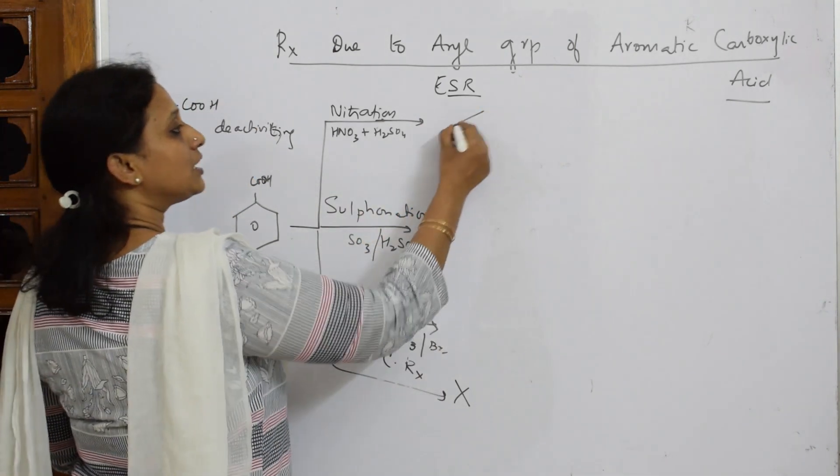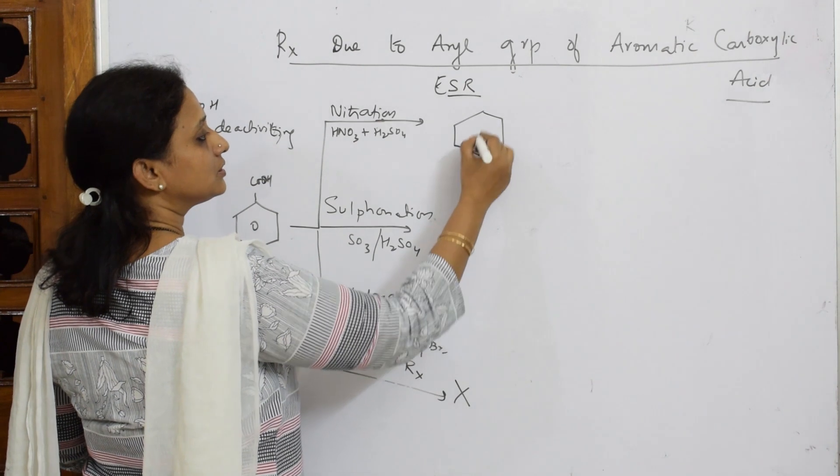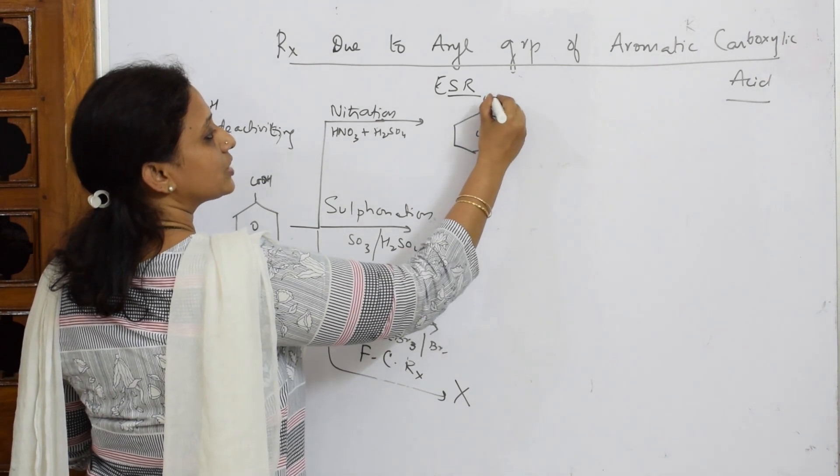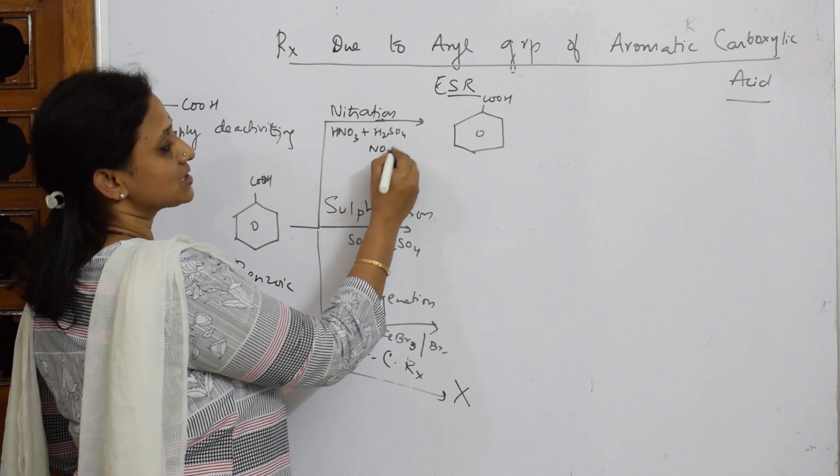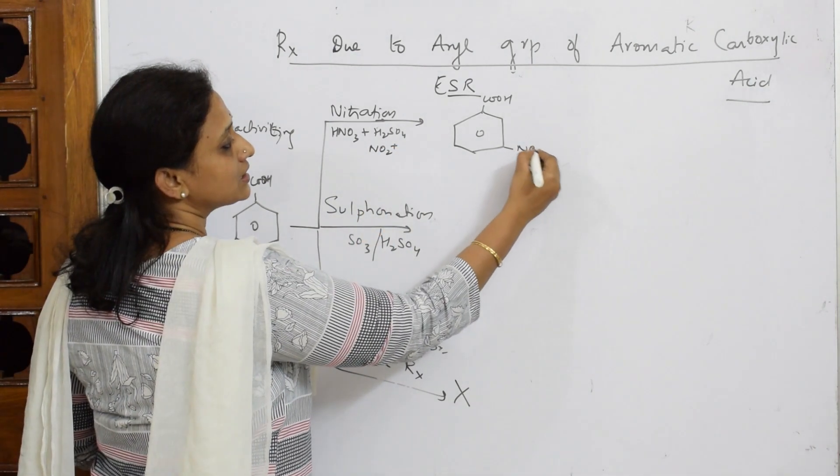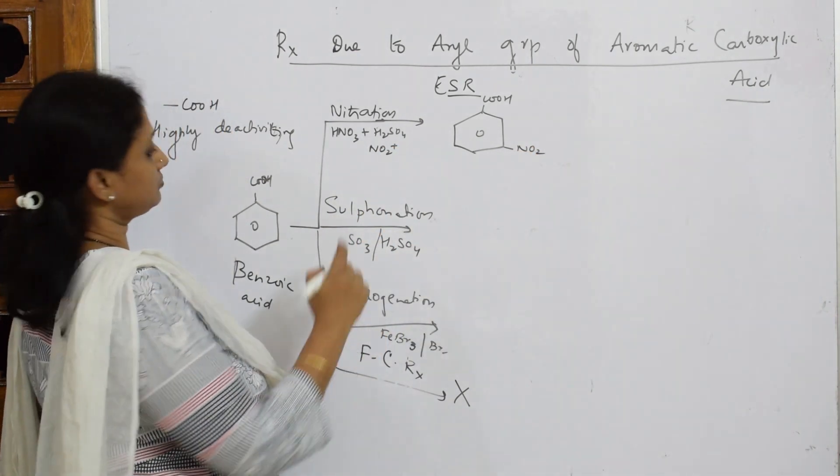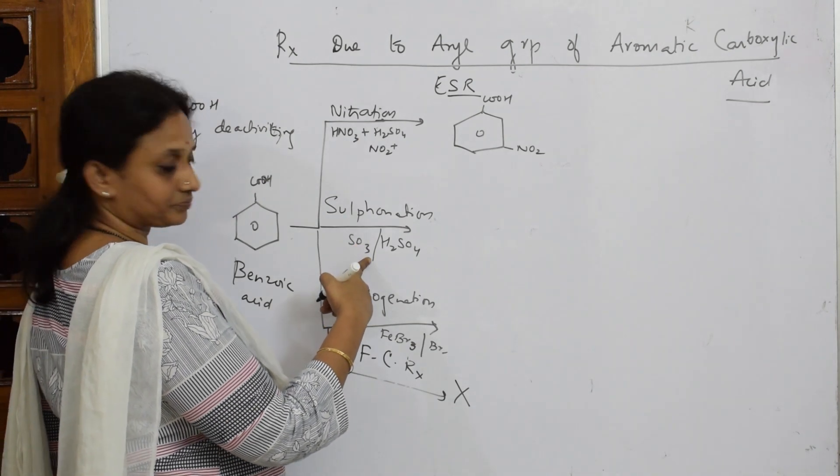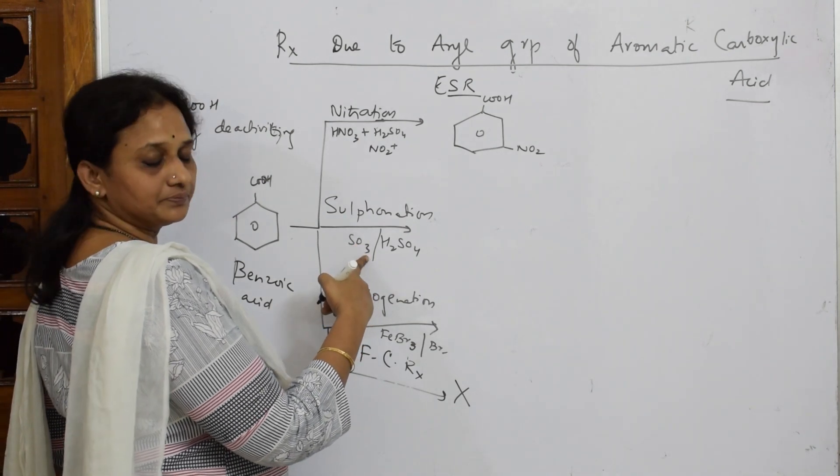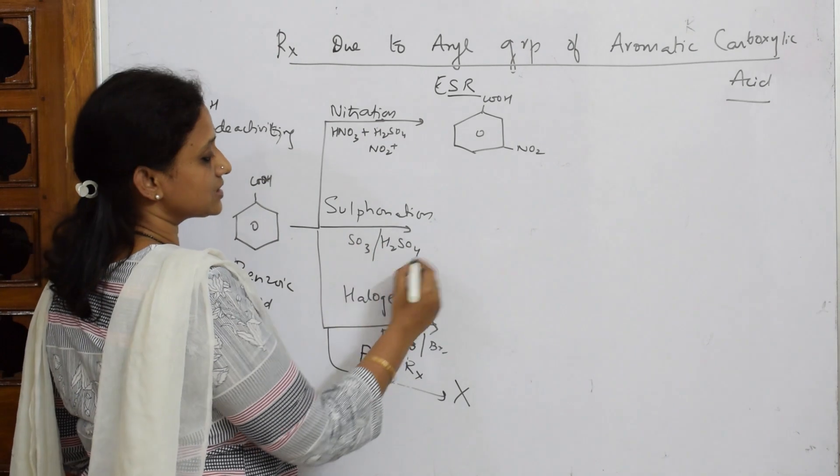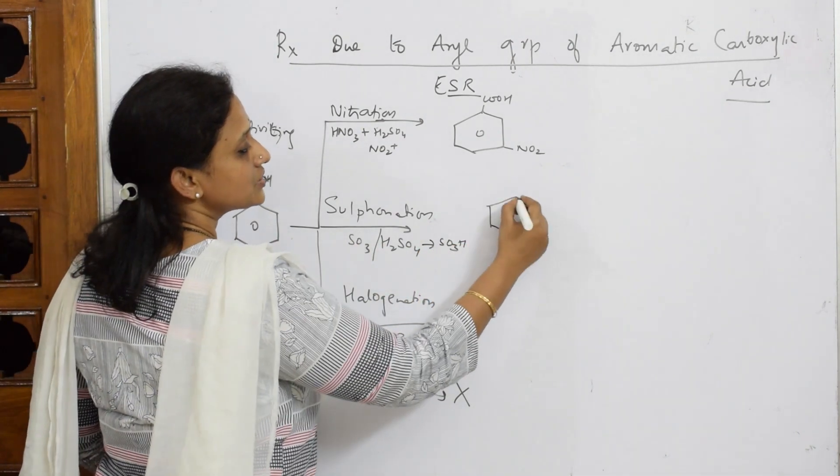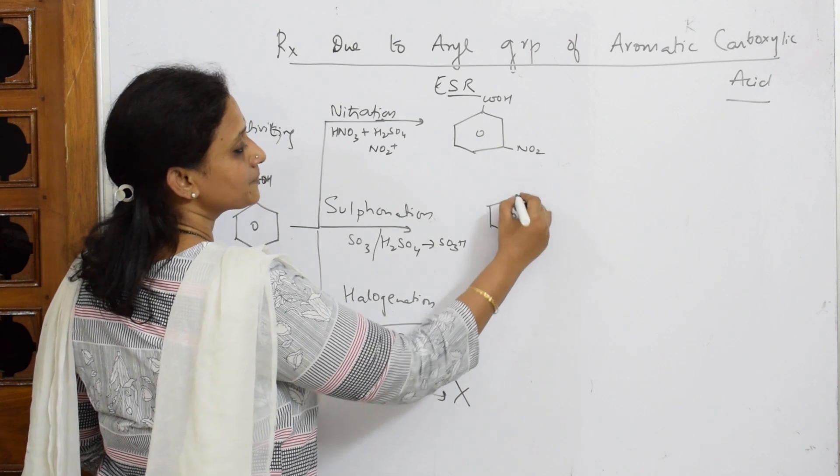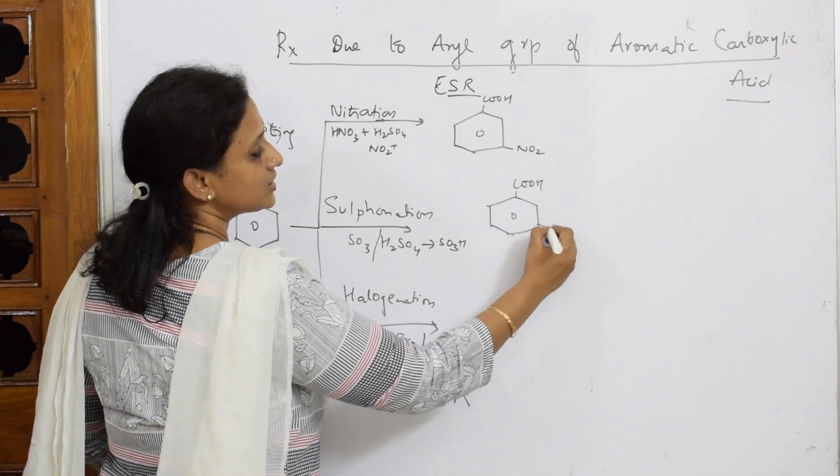Now simple, you are going to take your benzoic acid. Then the electrophile here is NO2+, so NO2+ at this position. Here the electrophile is SO3H - this is a grade 11 question - so SO3H, you will be getting your SO3H here.